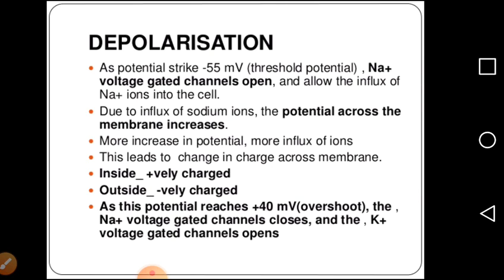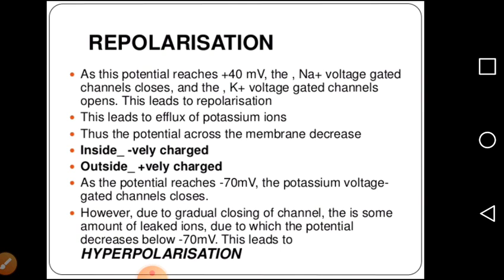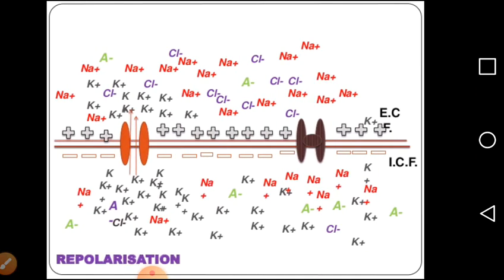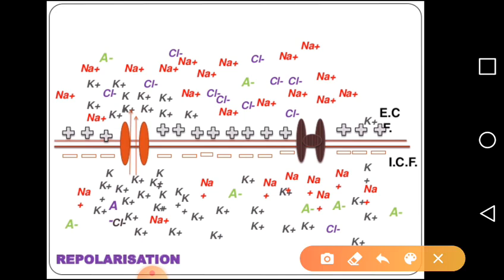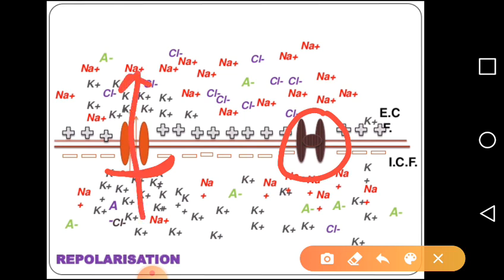The sodium voltage-gated channels close and the potassium gated channels open up. After plus 40 millivolts is reached, sodium voltage-gated channels close and potassium channels open. This leads to repolarization. The sodium channel is closed by a protein, and potassium channels remain open, causing efflux of potassium ions — potassium ions moving outside. When positive charge moves outside, it causes negativity inside and positivity outside — this is called repolarization.